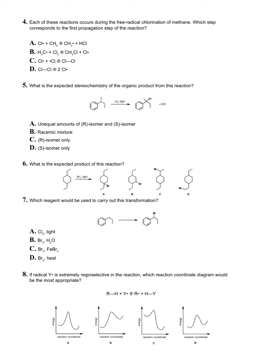Question four: each of these reactions occurs during the free radical chlorination of methane, which step corresponds to the first propagation step? In the initiation, we're generating two chlorine radicals, and in the first propagation step, that chlorine radical is abstracting hydrogen from methane. So choice A is correct.